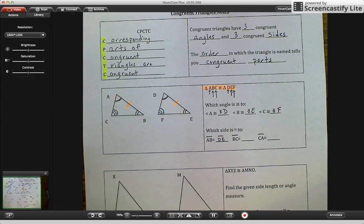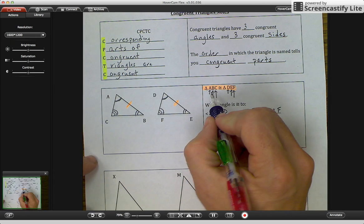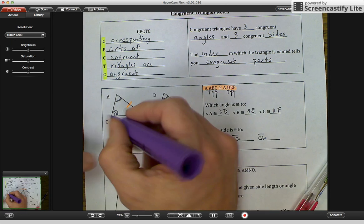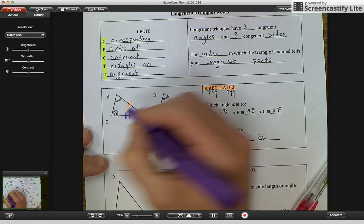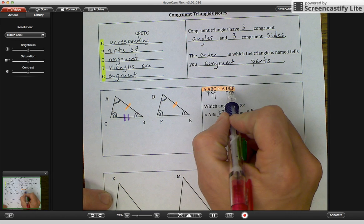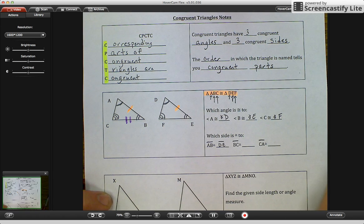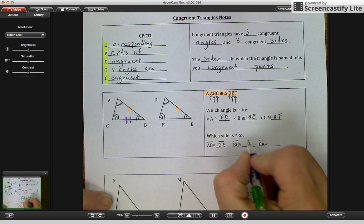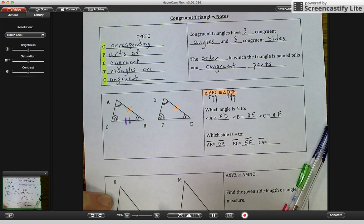I'm going to get a different color to do line segment BC. Line segment BC, I'm going to go two marks. And BC was the second and third letter. So second and third letter EF. Line segment EF. And I'm going to make two marks there.